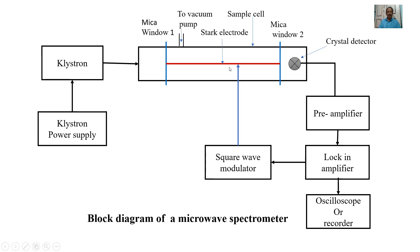This part is attached with a vacuum pump to avoid the influence of air molecules on the spectrum. The detector will observe the outgoing microwaves. Generally, the detector will be an RF receiver, but recently a crystal detector is used to obtain the signal, which is then fed into the oscilloscope or a recorder for reading purposes.